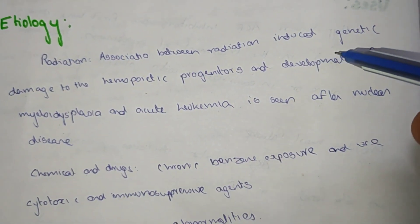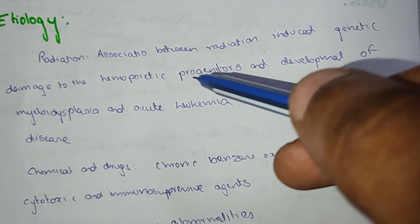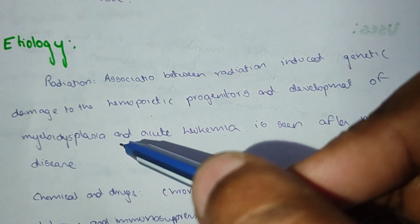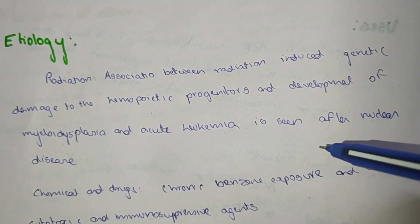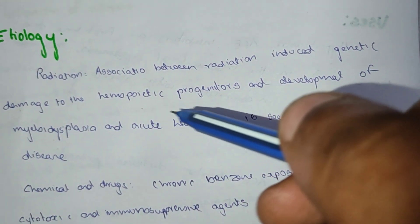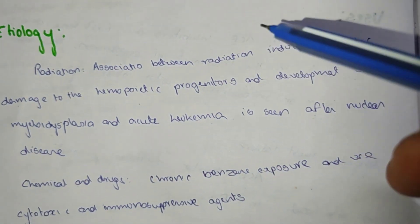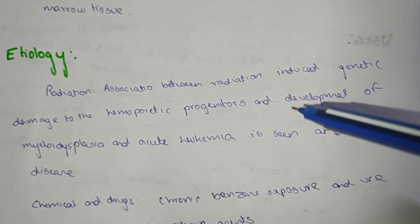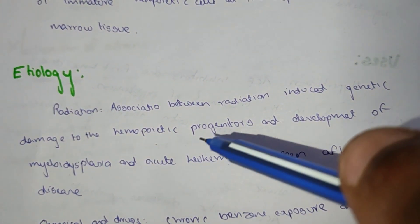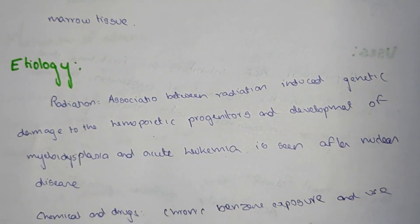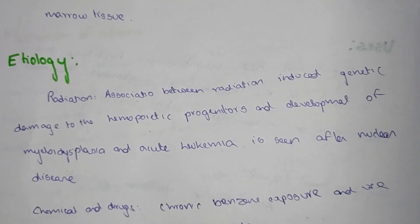Radiation is a major cause of acute leukemia. The association between radiation-induced genetic damage to the hematopoietic progenitor cells leads to the development of myelodysplasia and acute leukemia, as seen after nuclear disease.